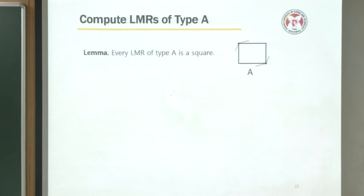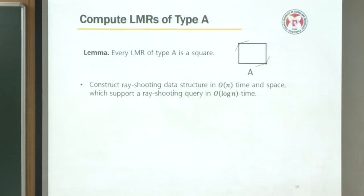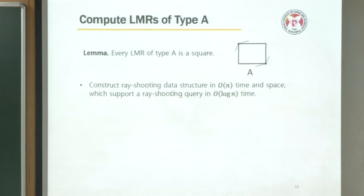Let's start with type A. Type A is the simplest case because it involves two opposite corner contacts on convex vertices of P. There is a lemma: every LMR of type A is a square, because the diagonal is fixed. If the diagonal is fixed, the largest rectangle is a square. Using this fact, we find all LMRs of type A by first constructing a ray shooting data structure, which can be constructed in linear time and space by Hershberger and Suri, and which supports a ray shooting query in O(log n) time.